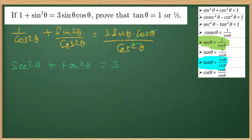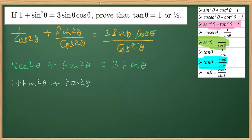On the right-hand side we have 3, and sinθ over cosθ can be written as tanθ, giving us 3tanθ. Now sin²θ over cos²θ equals tan²θ. We can convert sec²θ in terms of tan using the relation sec²θ equals 1 plus tan²θ. So we write it as 1 plus tan²θ plus tan²θ equals 3tanθ.